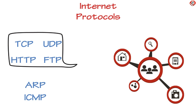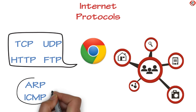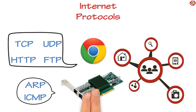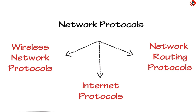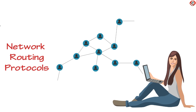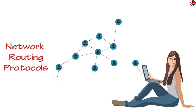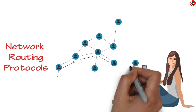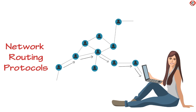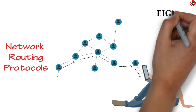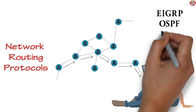TCP, UDP, HTTP, and FTP interact with applications like a Web Browser. On the other hand, ARP and ICMP interact with Network Adapters or NICs. Wireless Network Protocols are needed for proper functioning of Wi-Fi, Bluetooth, and LTE. Network Routing Protocols are needed for deciding the best download path for a device and include EIGRP, OSPF, and BGP.